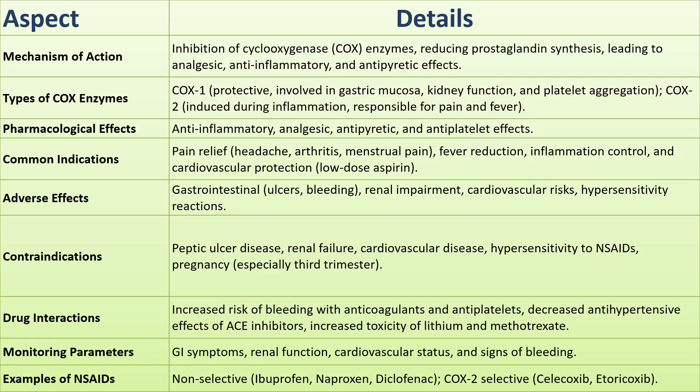Summary of clinical pharmacology of NSAIDs: Mechanism of action — NSAIDs work by inhibiting the cyclooxygenase (COX) enzymes, reducing prostaglandin production and leading to three main effects: pain relief, inflammation control, and fever reduction. COX-1 is responsible for protecting the stomach lining, maintaining kidney function, and supporting platelet aggregation. COX-2 is induced during inflammation and plays a role in pain and fever. Selective COX-2 inhibitors like celecoxib were developed to reduce gastrointestinal side effects while still providing anti-inflammatory effects. NSAIDs have multiple actions: they reduce inflammation, relieve pain, lower fever, and in some cases affect platelet function.